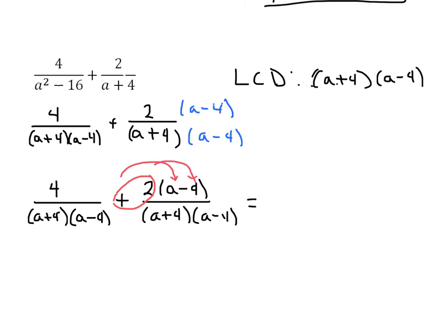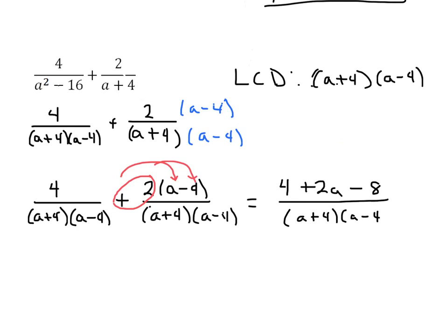When I put those numerators together, I'm going to distribute a positive 2 into both expressions. So we're going to have 4, then 2 times a gives us a positive 2a, and positive 2 times negative 4 gives us a negative 8 — all over a plus 4 times a minus 4. Now we have some like terms we can combine: we have a 4 and a negative 8.